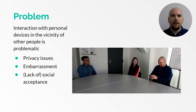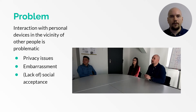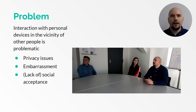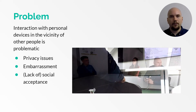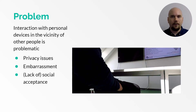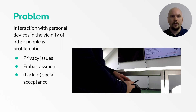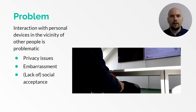People interact with their mobile devices frequently. For example, we continuously check our devices for notifications and texting has become a fundamental form of communication. However, interacting with personal mobile devices like smartphones and smartwatches is problematic when there are other people nearby. This can result in privacy issues, but most importantly, using one's personal devices is often perceived negatively or their use might even be forbidden. For example, pulling out a smartphone can disrupt a conversation and upset others.